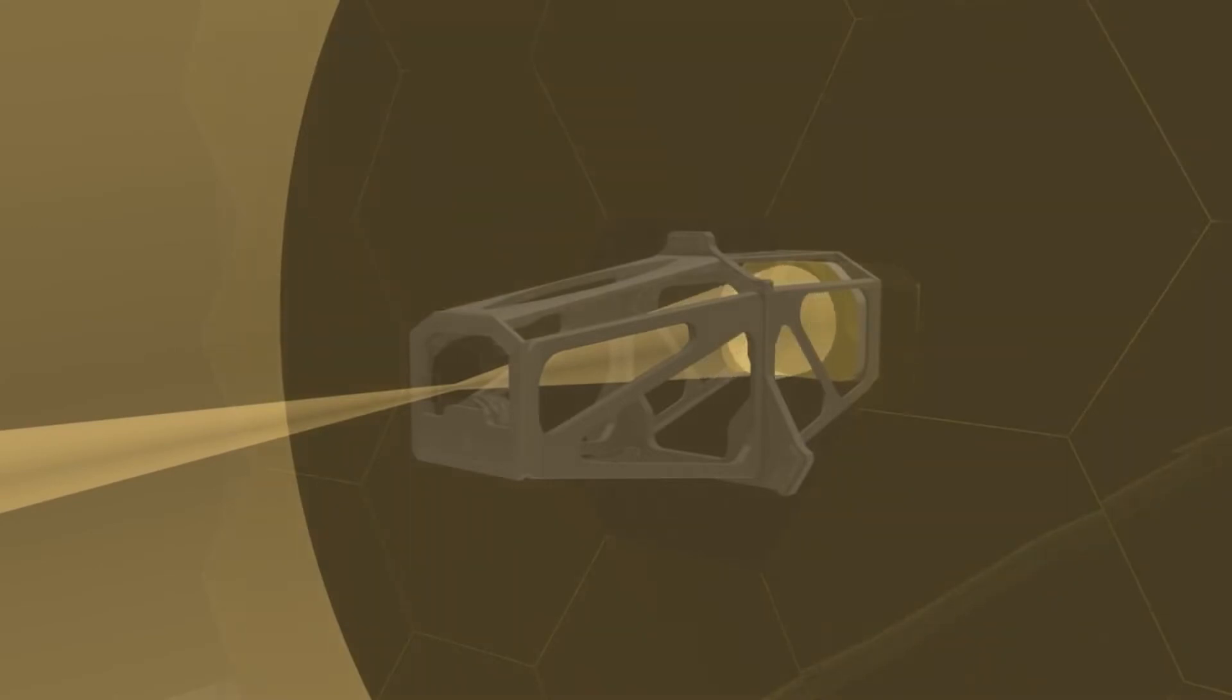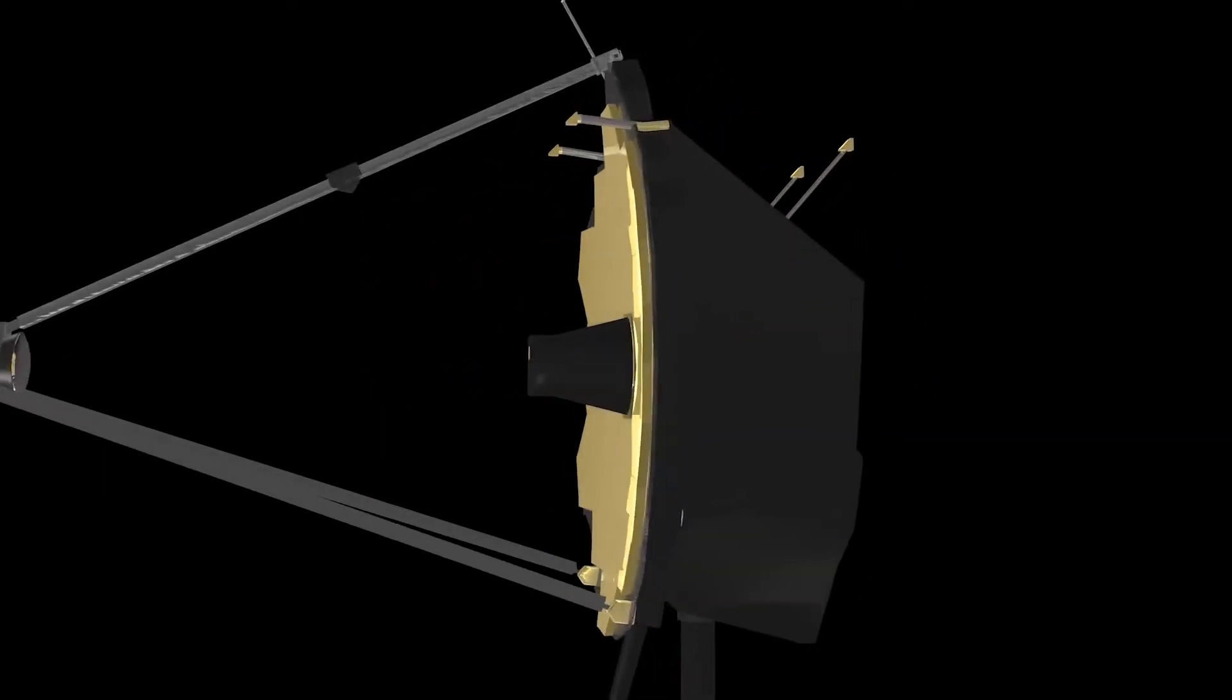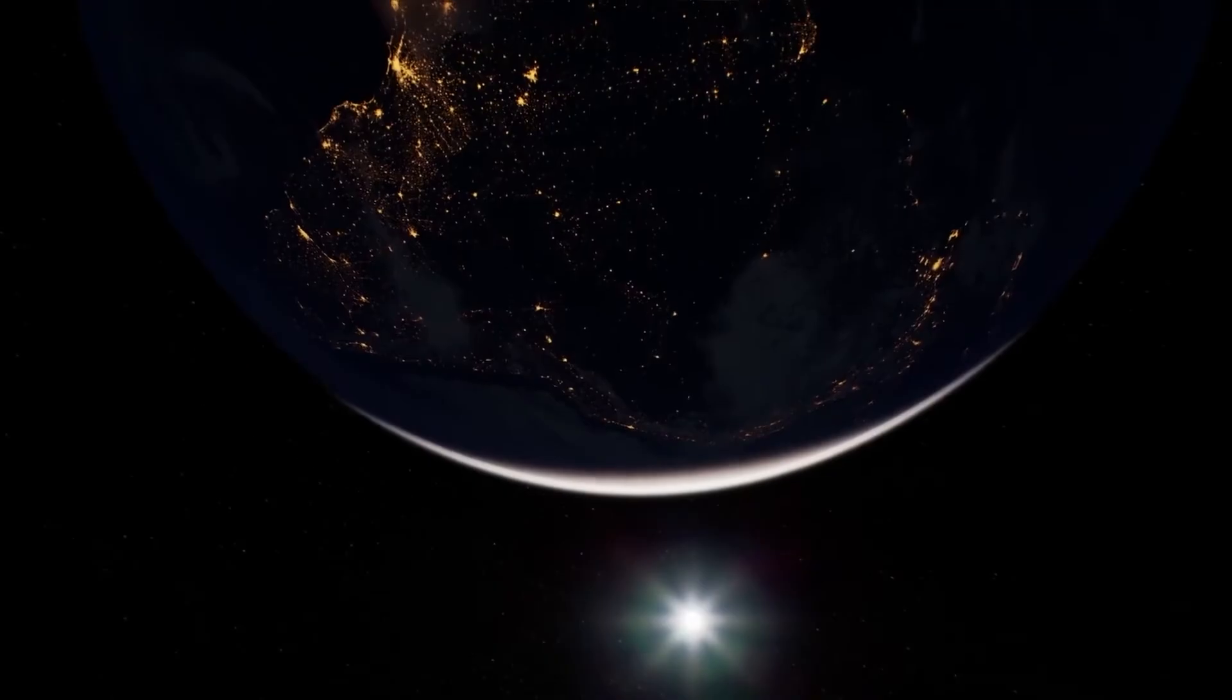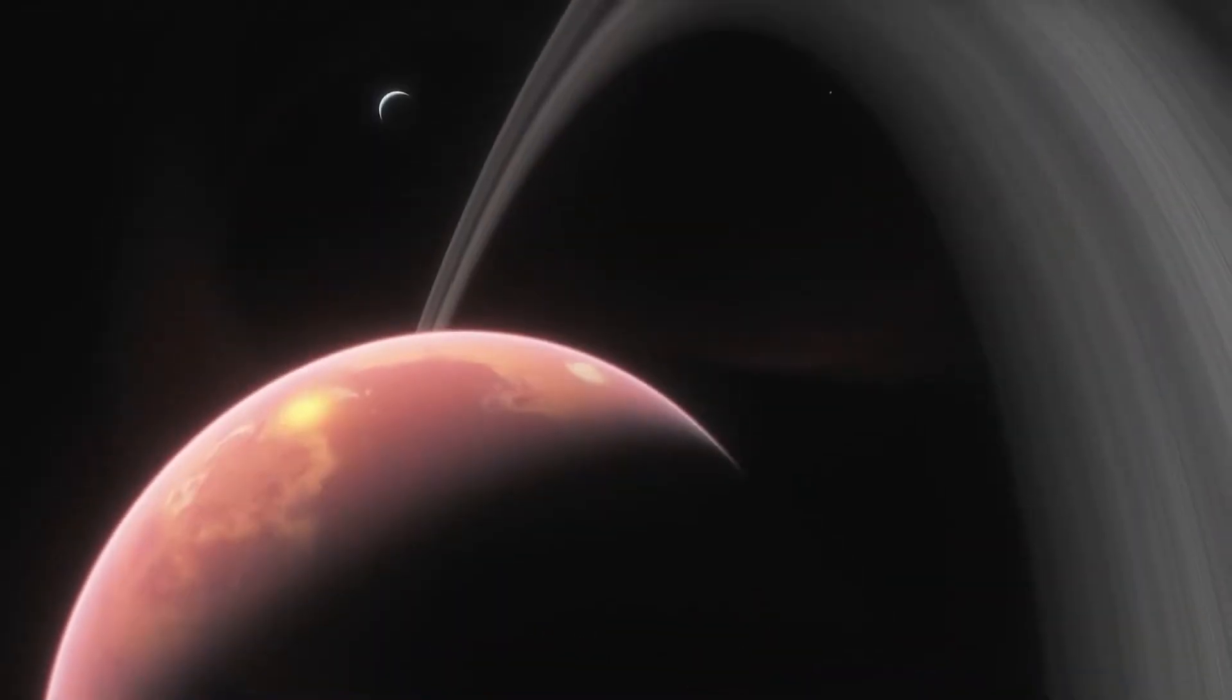Webb's sunshield has five Kapton layers that are tensioned. As a result, the protection side will be as chilly as minus 230 degrees Celsius, while the sun-facing side will be up to 90 degrees Celsius.